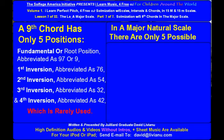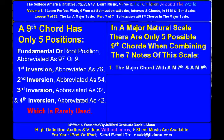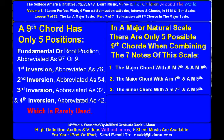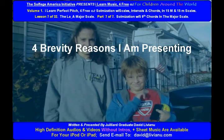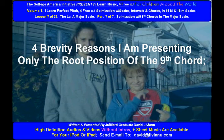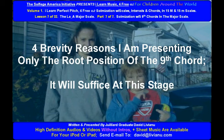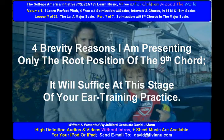In a major natural scale, there are only five possible ninth chords when combining the seven notes of this scale: the major chord with a major seventh and a major ninth, the minor chord with a minor seventh and a major ninth, the minor chord with a minor seventh and a minor ninth, and the diminished chord with a minor seventh and a minor ninth. For brevity reasons, I am presenting only the root position of the 9th chord. It will suffice at this stage of your ear training practice.